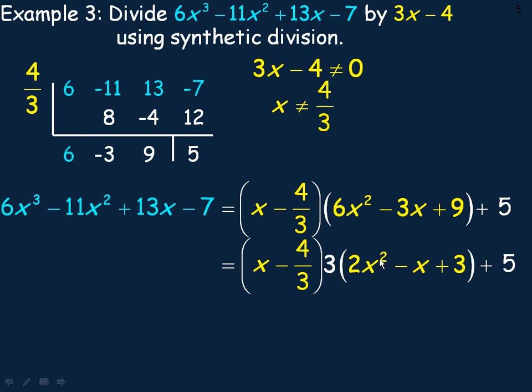This is where we get the 3x minus 4 back from. If you take that 3 and multiply it into the binomial in the front, 3 times x is 3x, and 3 times the -4/3 is -4, because the 3s in that product divide out and we just get -4.